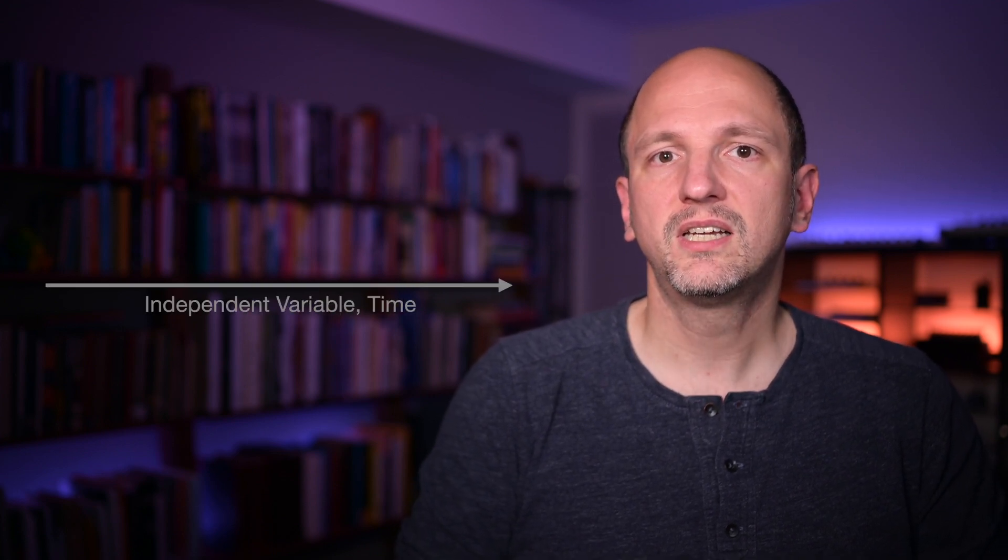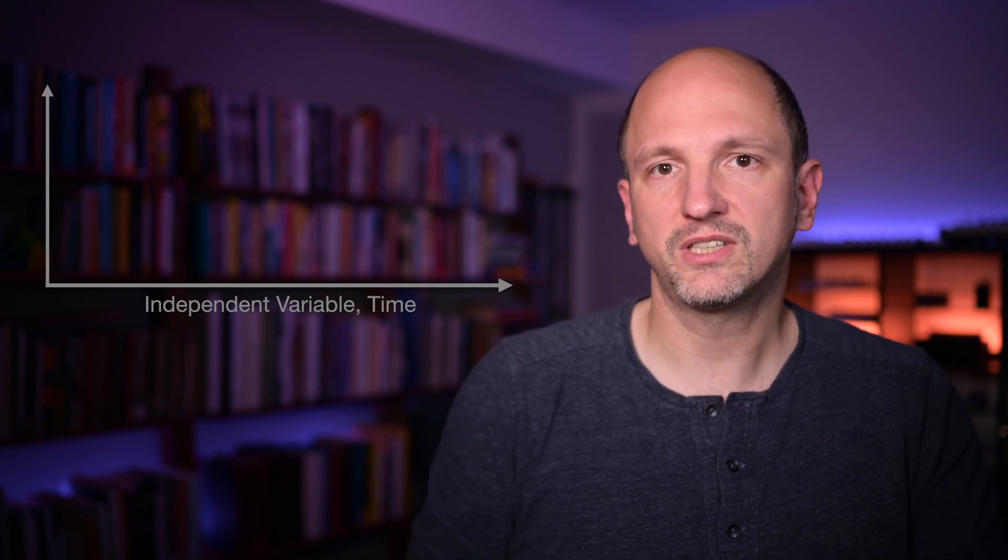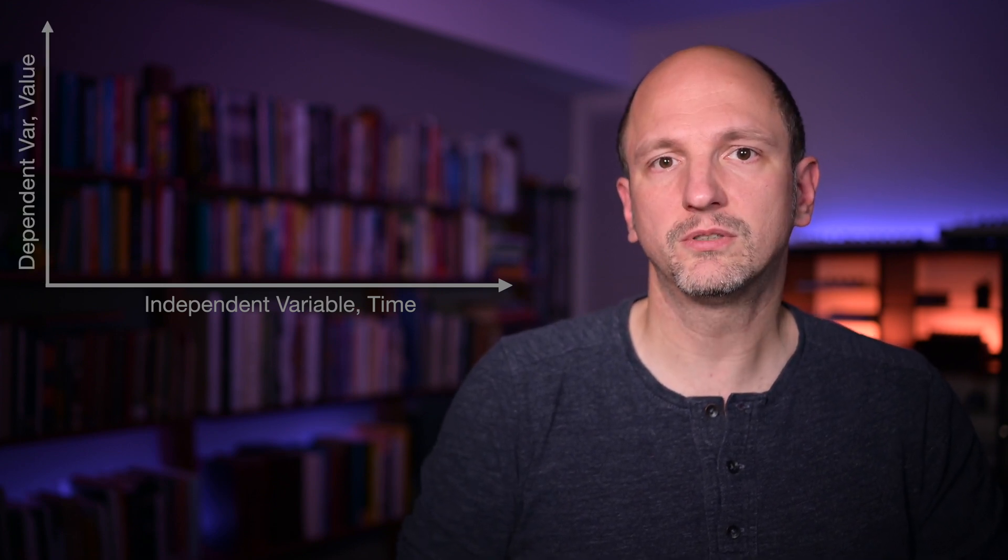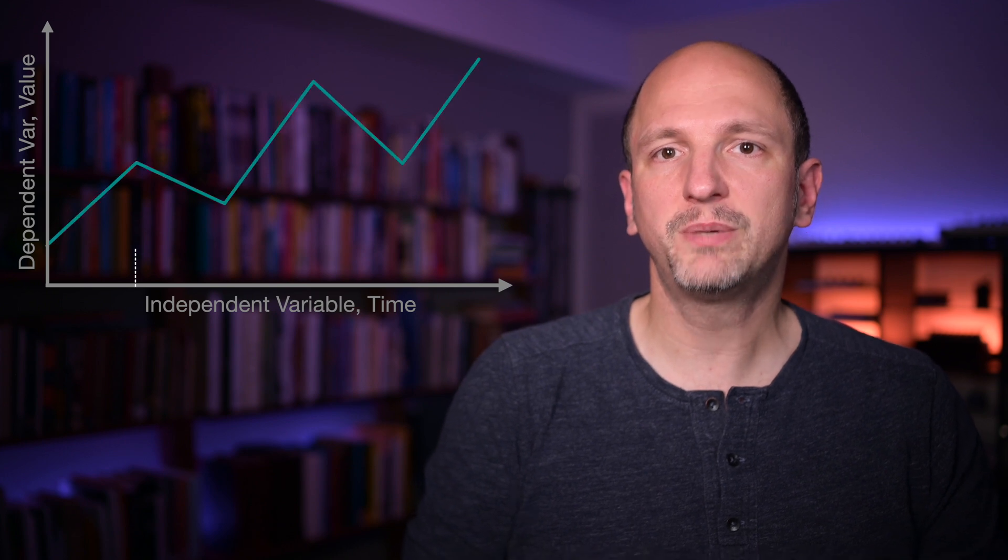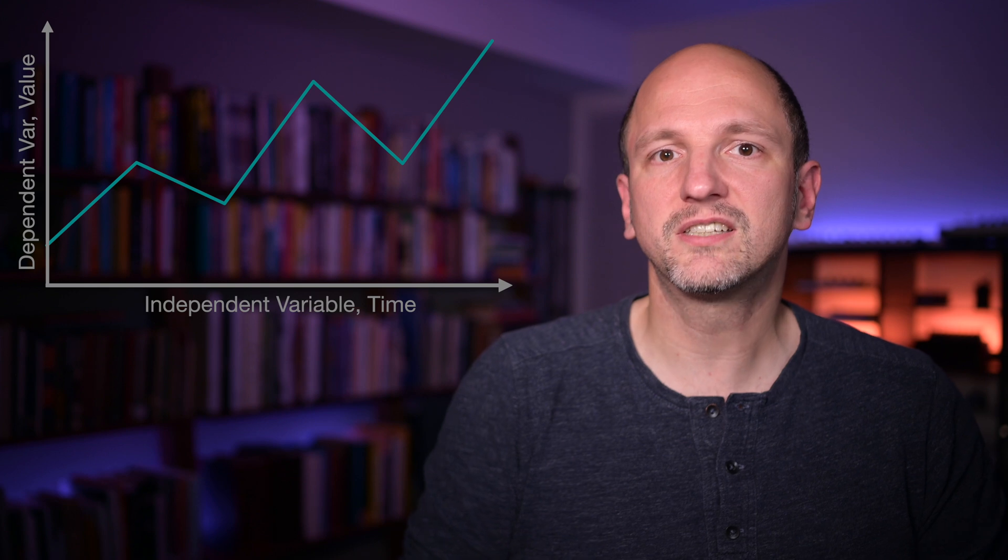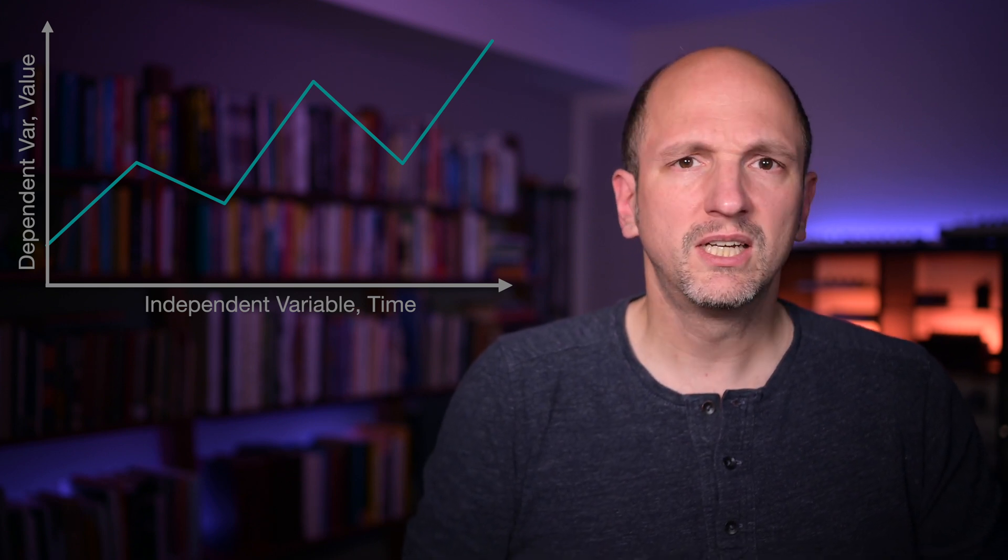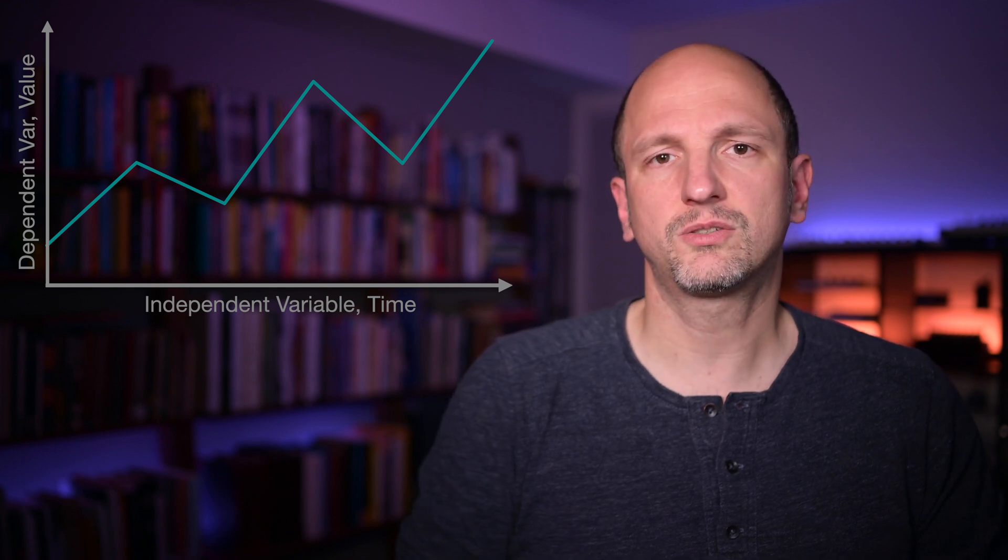These charts have two dimensions. There's the horizontal axis, which is called the independent variable in statistics. In our case, this is always going to be time. The other axis is the vertical axis, called the dependent variable, because its value depends on the independent variable. I'm just going to call this the value here, and this could be anything like sales, or temperatures, or the unemployment rate, or number of people moving between states, and so on.